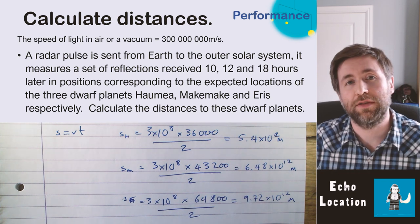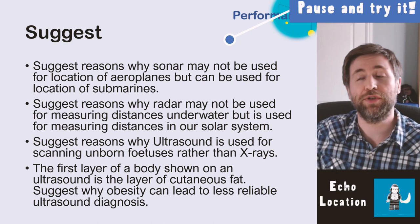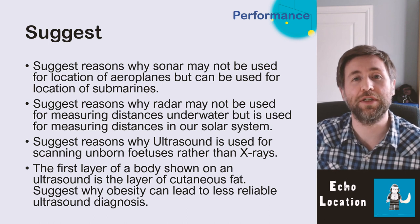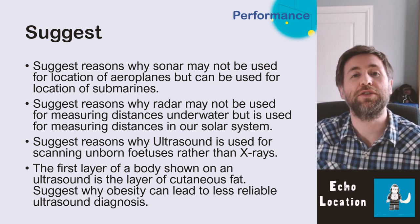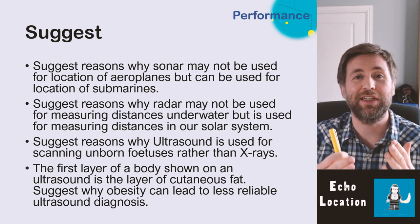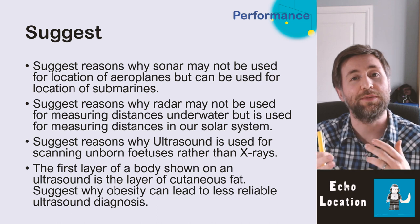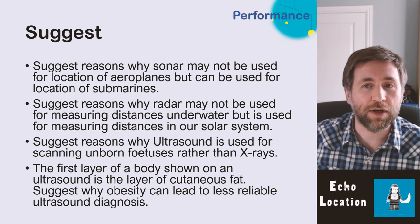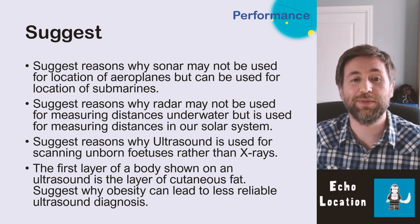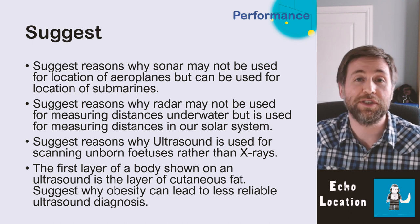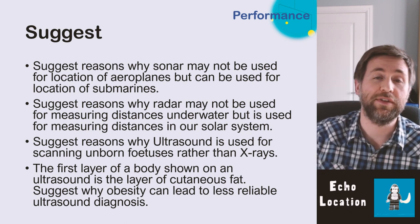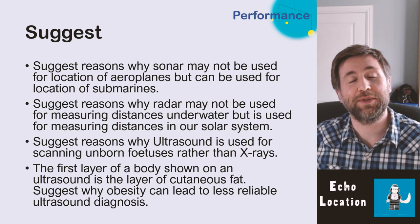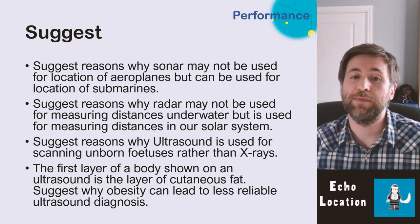'Suggest' is one of the hardest command words because you must apply your knowledge to a new situation. Suggest reasons why sonar might not be used for locating airplanes but can be used for submarines: sound travels at ~330 m/s in air but 1500 m/s in water. An airplane may travel faster than or at a significant fraction of the speed of sound in air, making sonar unreliable. A submarine is unlikely to be moving anywhere near 1500 m/s, so sonar accurately locates it.